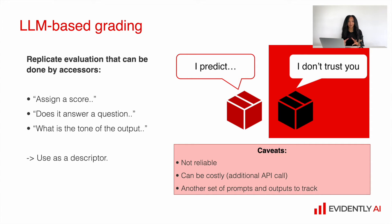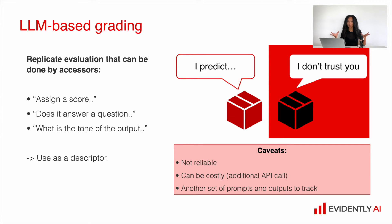However, there are some caveats to that, because sometimes it's not really reliable — it's model-based grading. It can also be costly, especially if you have a lot of text, because you send each text through the API to an external model. And you need to come up with appropriate prompts and outputs to check, so that's a little bit tricky, but it's a very interesting approach.